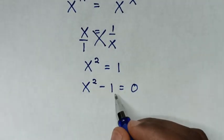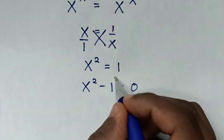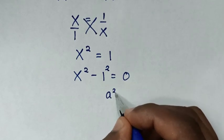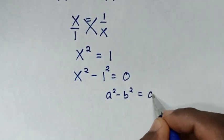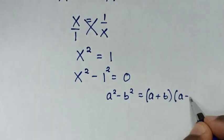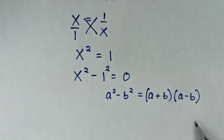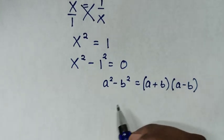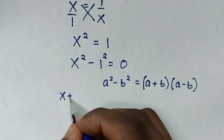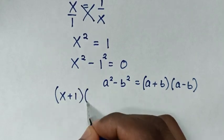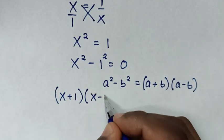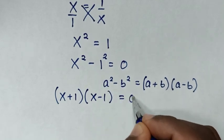Now to make this in the form of a perfect square, 1 is the same as 1 squared. Then in here we'll apply the rule: a squared minus b squared is equal to (a plus b)(a minus b). Then our equation will be (x plus 1)(x minus 1) is equal to 0.